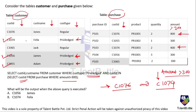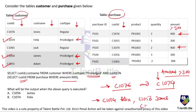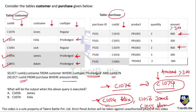The outer query selected C1074 Felix, C1056 James, and C1055 Adam as privilege customers. Combining with the inner query results — C1076 and C1074 — only C1074 appears in both sets. So C1074 Felix satisfies the full query. The output is option B: C1074 Felix, giving customer ID and customer name.